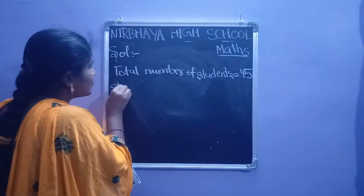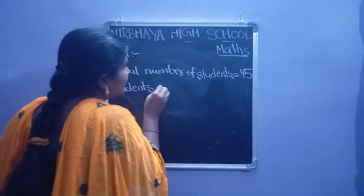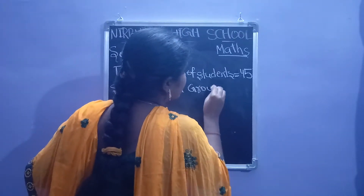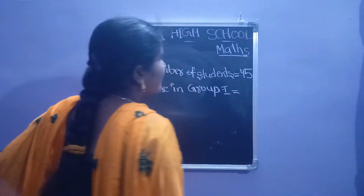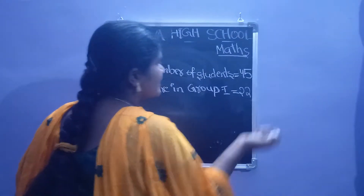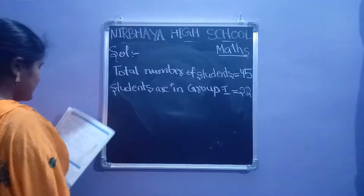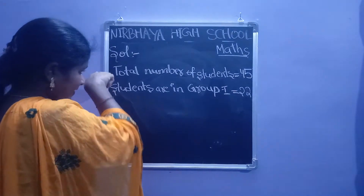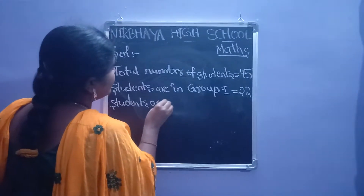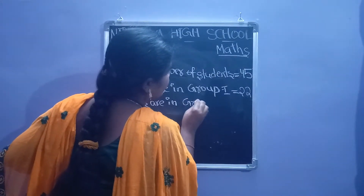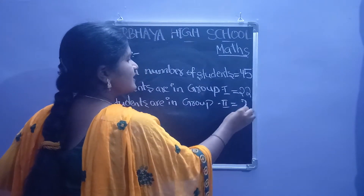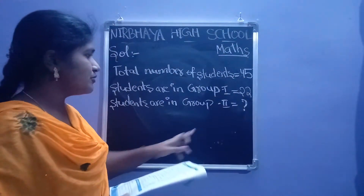Next: students in group 1. They are divided into two groups. In group 1, 22 students are there. In group 2, students are — we have to find the answer, so question mark. Students are in group 2 — question mark. We have to find the students in group 2.